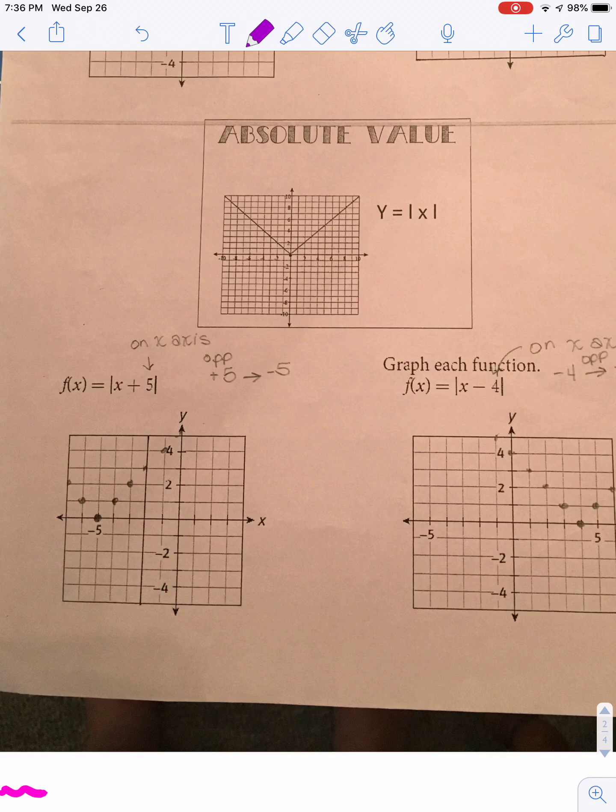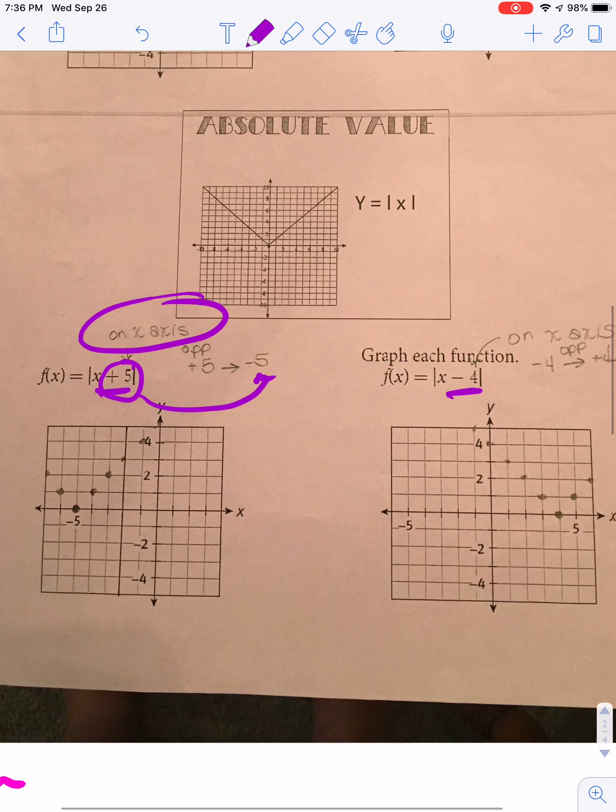Now when you have stuff that's inside the absolute value with the x, that's when you have a shift on the x-axis. And remember, those are opposites. So if I have that plus 5 here, it's really going to get shifted to negative 5.